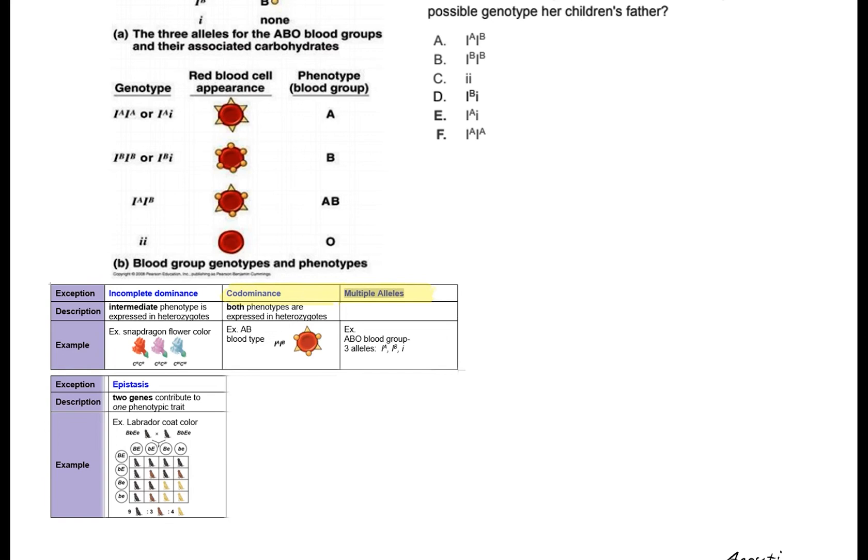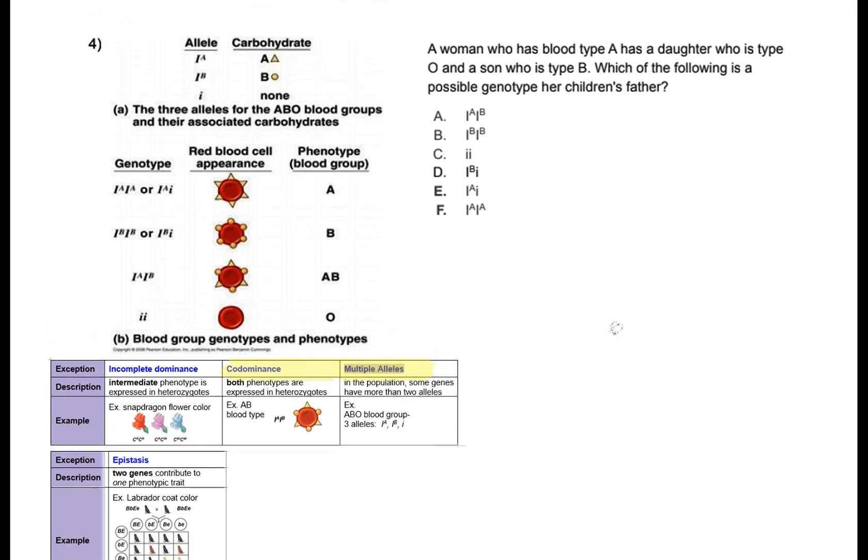Also in this problem we see a Mendelian exception that we can call multiple alleles where you have a gene that has more than two alleles. This might be new for some of you as we just did some problems where we only had two alleles for a gene but yes, you can have more than two. You can have four, you can have six, you can have eight alleles. It really depends on the amount of genetic variation that that gene can have.